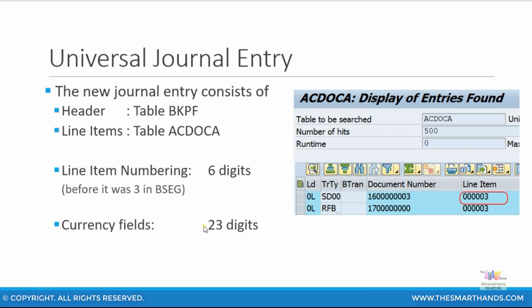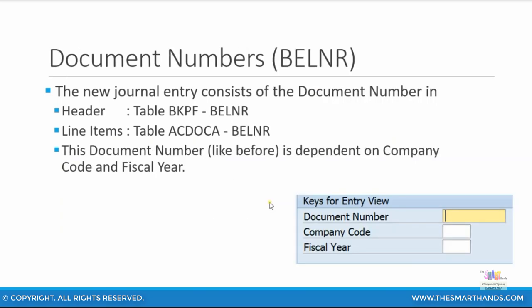Also, the currency fields have been upgraded to 23 digits, so you can have a very large number followed by multiple decimals. The document number is still consistent using the BELNR field. The header document number in the BKPF table and BELNR field is the same as in the line item table ACDOCA. So the document number, as before in SAP ERP, is dependent on company code and fiscal year.